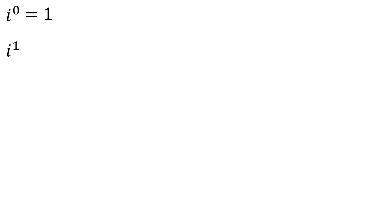We have already stated that i to the first power is equal to the square root of negative 1, but usually you will write it as just i rather than the square root of negative 1. Our definition already stated that i squared is equal to negative 1, so we have that for our second power of i.